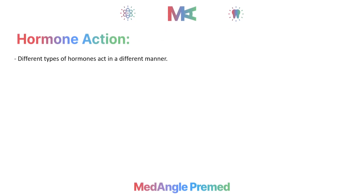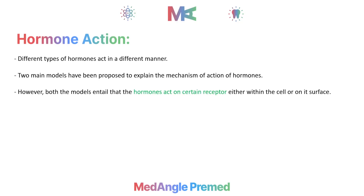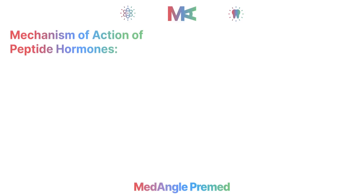Now let's talk about hormone action. We have two main models proposed for different types of hormone action. Hormones work by going to a receptor, and then we will see the mechanism in the next step. First, let's talk about the mechanism of action of peptide hormones.